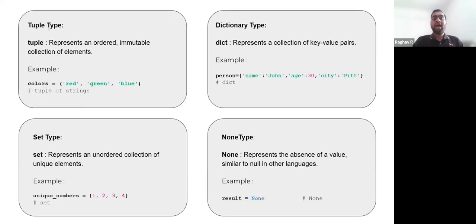We have the tuple data type, which is very similar to a list, but a tuple represents an ordered immutable collection of elements. You cannot add or delete elements once the tuple has been created.